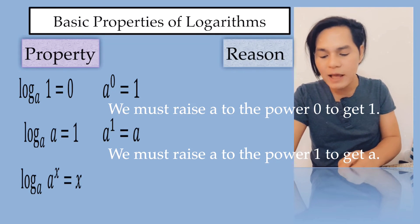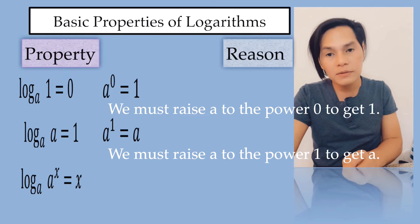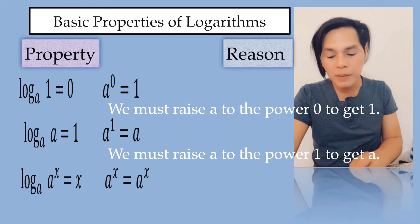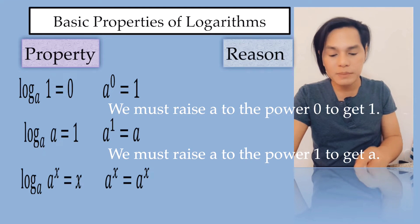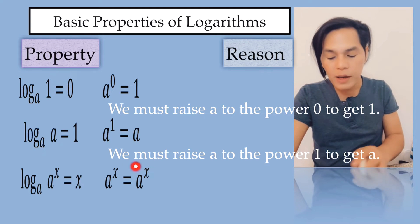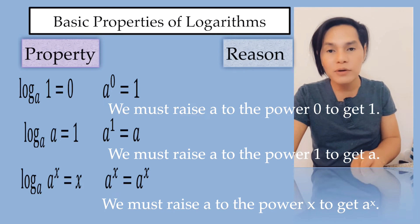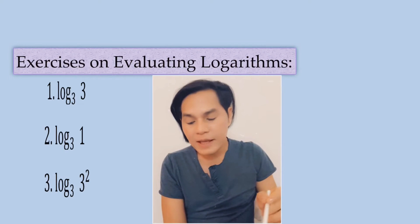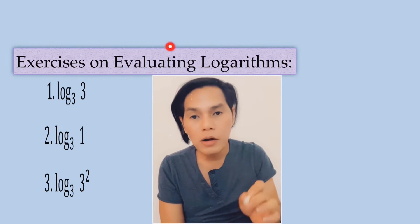The third property is the log of a to the power of x, to the base a, is equal to x. In exponential form this is a to the power of x equals a to the power of x. The reason is we must raise a to the power of x to get a to the power of x. So that's how you do that.